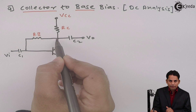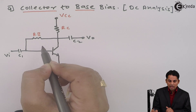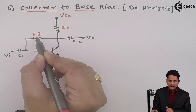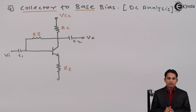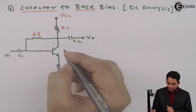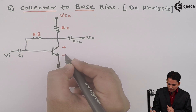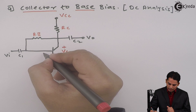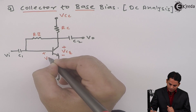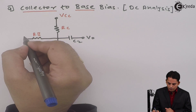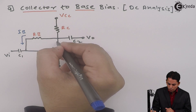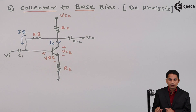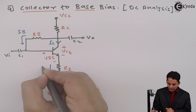A loop is joined from collector to base with the help of base resistor RB, and hence it is called collector to base bias. Now we are going to mark different directions of current and different values of voltage. The voltage between collector and emitter is called VCE, whereas voltage between base and emitter is called VBE. Current from the base is called IB, current from the collector is called IC, and current from the emitter is IE.